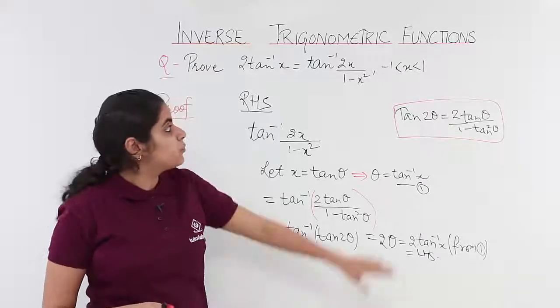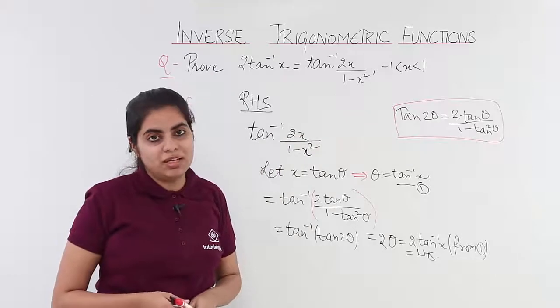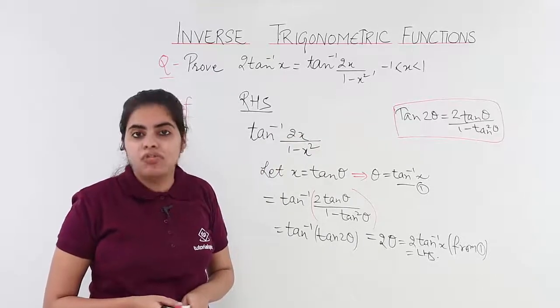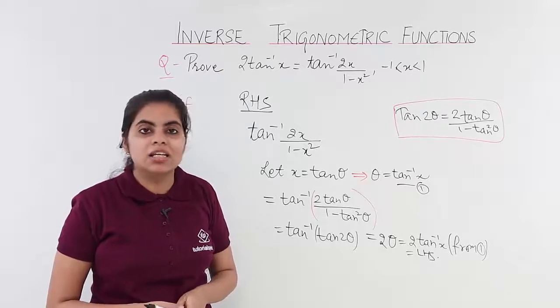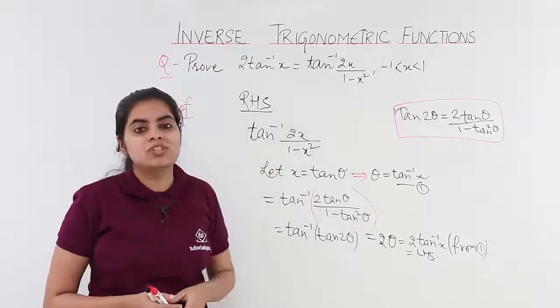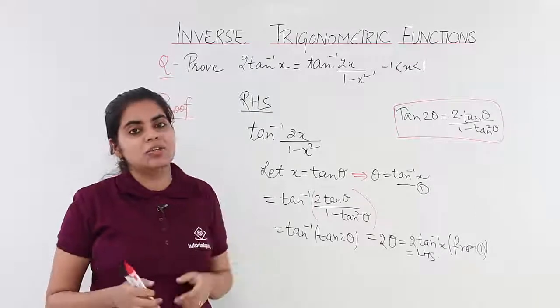Hence, it is verified that 2 tan inverse x is equal to tan inverse 2x upon 1 minus x square, which is the formula of 2 tan inverse x in the values related to tan inverse and not sin inverse or cos inverse as in the previous videos.